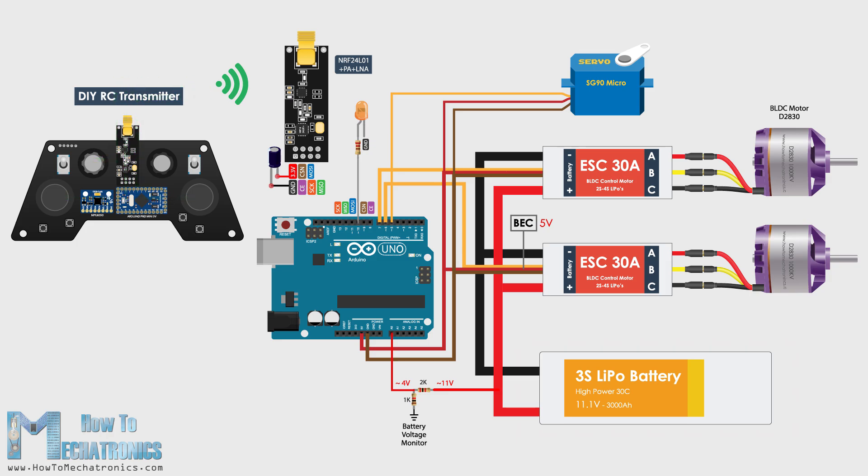There is one more small detail on this circuit diagram and that's the battery monitor. I added a simple voltage divider made out of two resistors, which is directly connected to the battery and its output goes to the analog input of the Arduino. The voltage divider drops the 11V to around 4V which are then acceptable by the 5V Arduino pins. With this we can monitor the battery voltage and set an LED to light up when for example the voltage of the battery will drop under 11V.